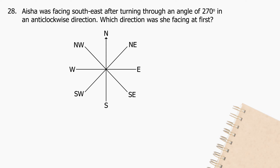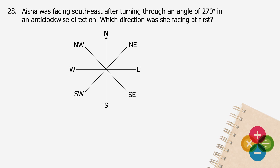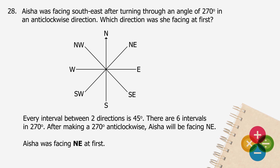Question 28: Aisha was facing southeast after turning through an angle of 270 degrees in an anticlockwise direction. Which direction was she facing at first? Every interval between two directions is 45 degrees. There are six intervals in 270 degrees. After making a 270-degree clockwise turn, Aisha will be facing northeast. Aisha was facing northeast at first.